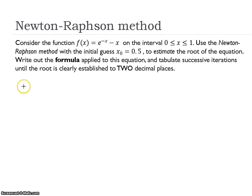In this example, we will use Newton-Raphson method to approximate the root of the function f(x) equals e to the power of negative x subtract x on the interval of x between 0 to 1. We are given the initial guess of x0 equals 0.5.